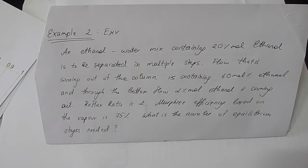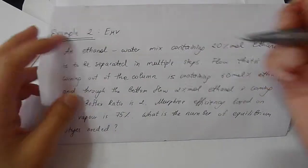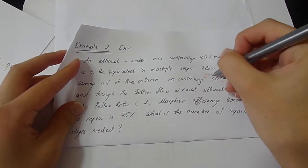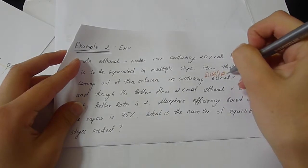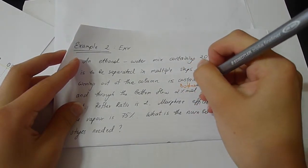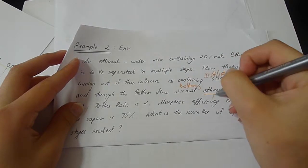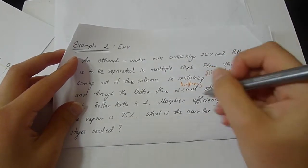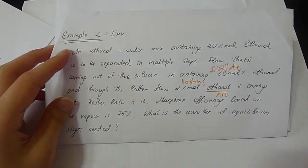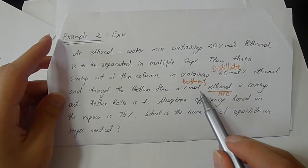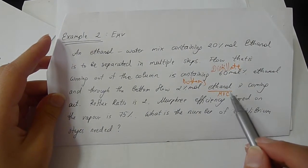And through the bottom flow, 2 mol% of ethanol is coming out. So here it's the distillate. This is the bottoms. And ethanol is most volatile component. So we will use only ethanol mole fraction. So 2 mol% in the bottom of ethanol is coming out.